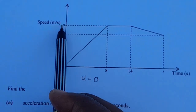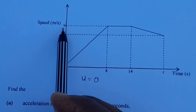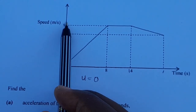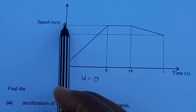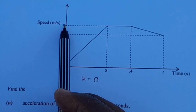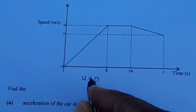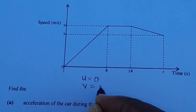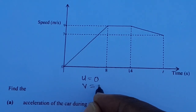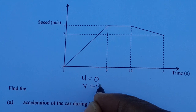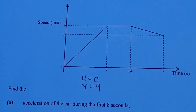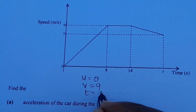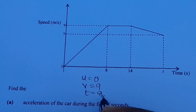The final velocity V is 9 — this is the highest velocity that the car reached. So V, the final velocity, is 9. Then time is 8 seconds.